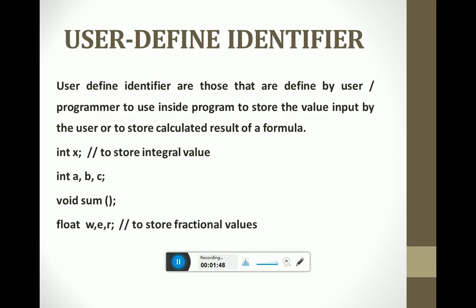The second type of identifier is the user-defined identifier. These are defined by the user or programmer to use inside programming — to store values input by the user or to store calculated results of a formula. These are the user-defined identifiers, defined by a particular user.